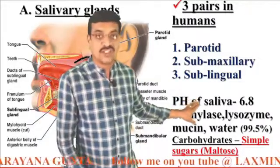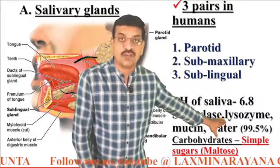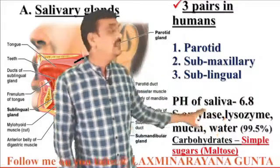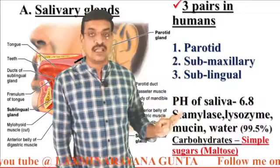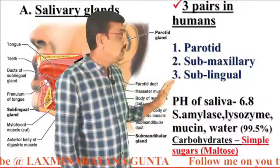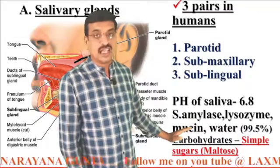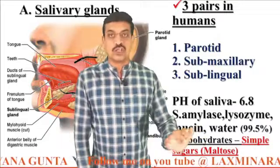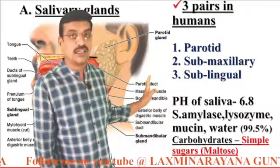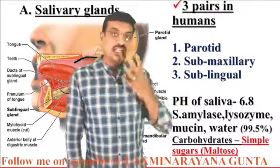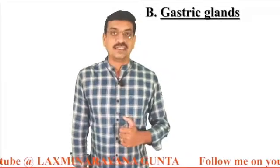The major content of saliva is water, accounting for 99 to 99.5 percent. The salivary amylase converts carbohydrates into simple sugars called maltoses. About 30 percent of carbohydrates are digested into maltoses in the mouth.